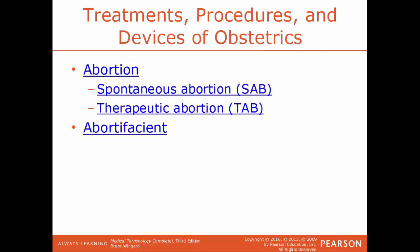Abortion is the termination of a pregnancy, and there are different kinds. SAB, spontaneous abortion, is non-induced — a natural death of an embryo, usually within 20 weeks or less of development; another term for this is a miscarriage. TAB, therapeutic abortion, is when an abortion is done to protect the life of the mother. Abortifacient is any product that will induce an abortion.